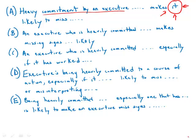Because of the problems with that pronoun, we're going to say that A doesn't work. Answer choice B: 'an executive who is heavily committed makes missing signs likely.' Notice that the executive is the subject and 'makes' is the verb — it sounds like the executive himself is causing the problem. But the sentence is saying it's the heavy commitment that causes the problem, not the executive himself. So we eliminate answer choice B.